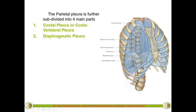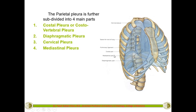The part in contact with the dome of the diaphragm or the base of the lung is called the diaphragmatic part. The part at the neck is the cervical pleura. The part in contact with the mediastinal wall — where the heart and other mediastinal contents are located — is called the mediastinal pleura.